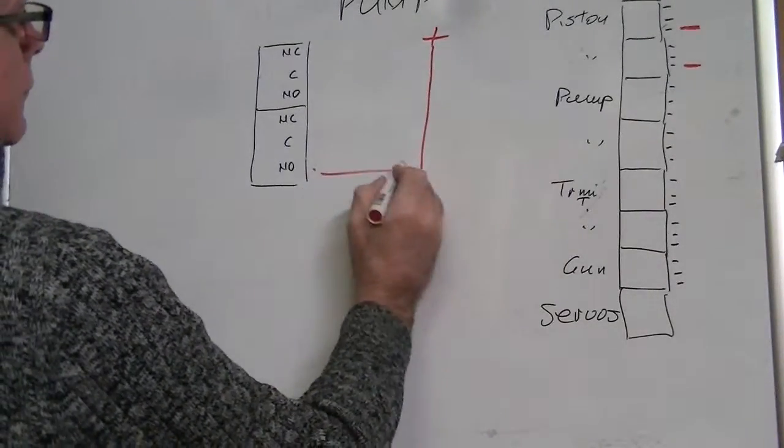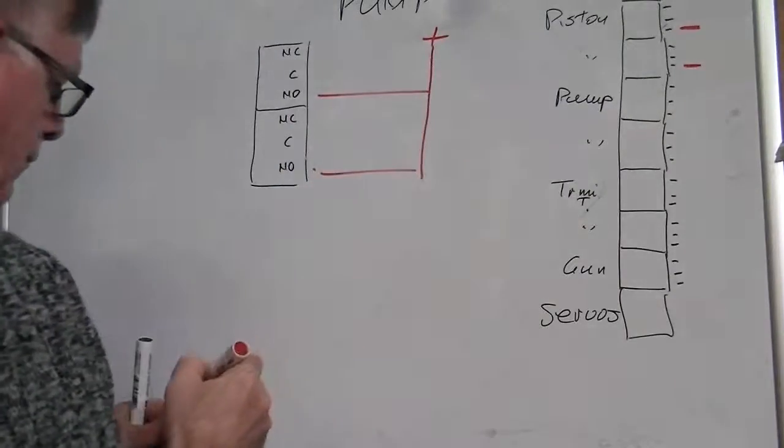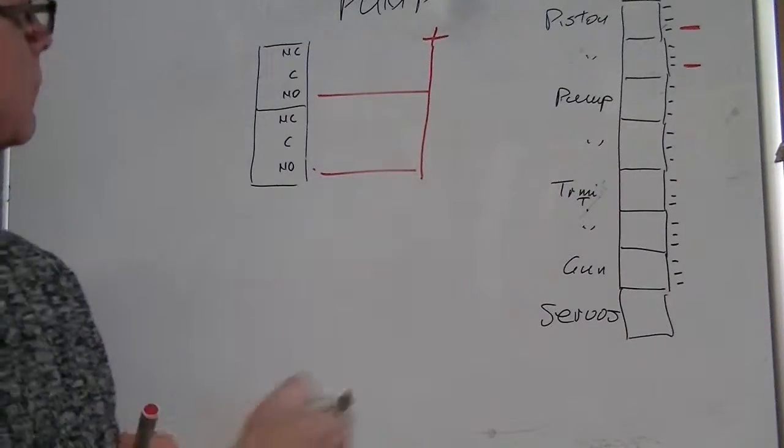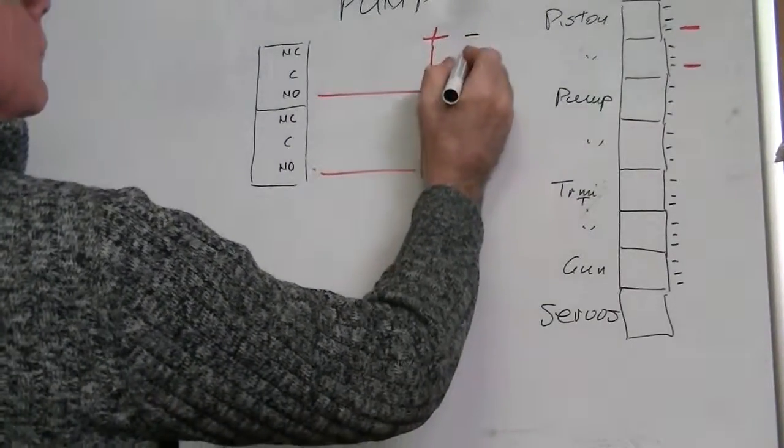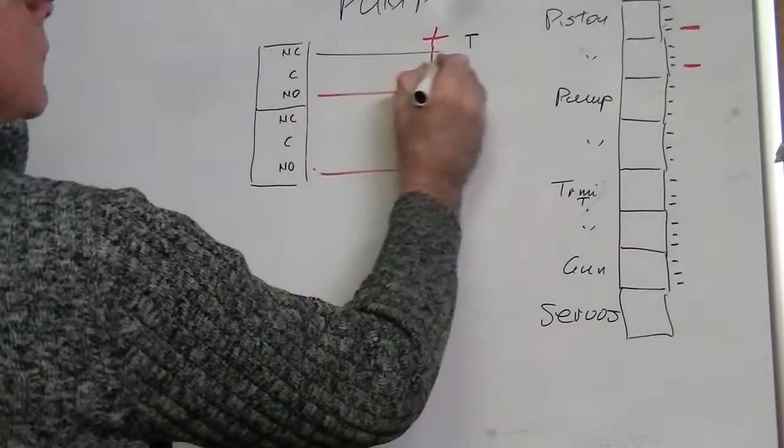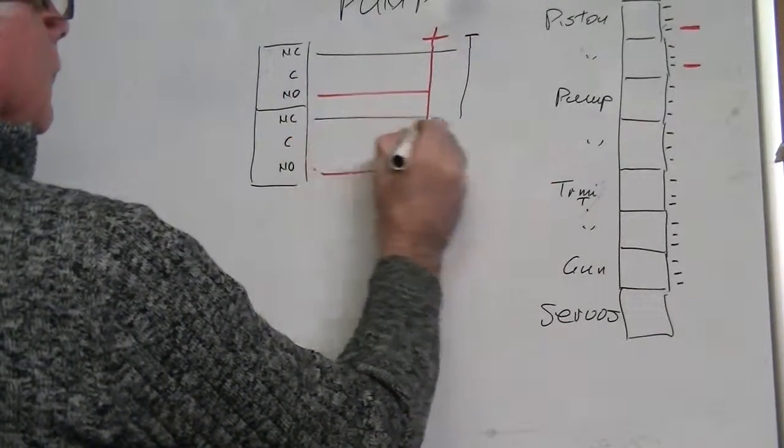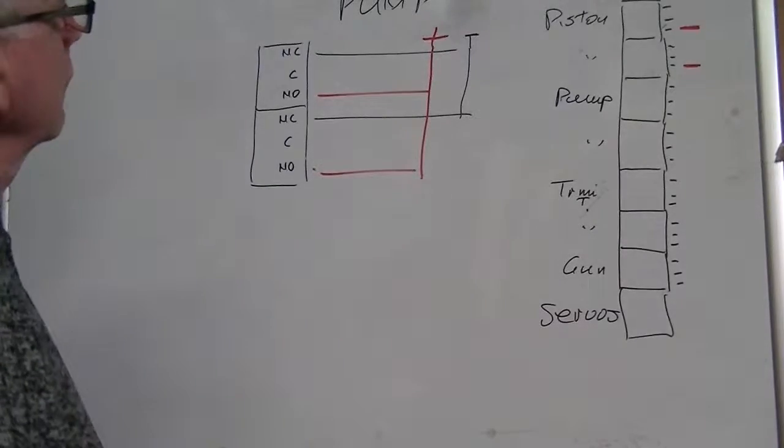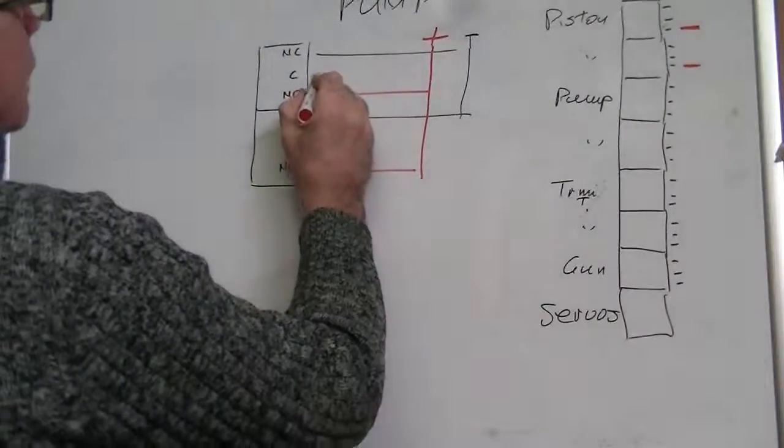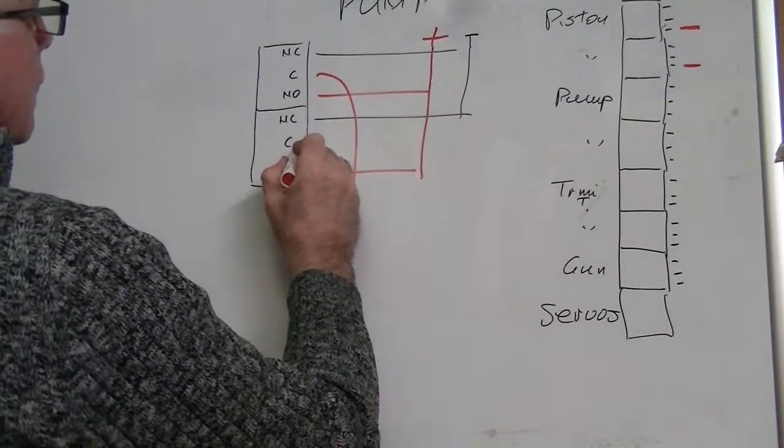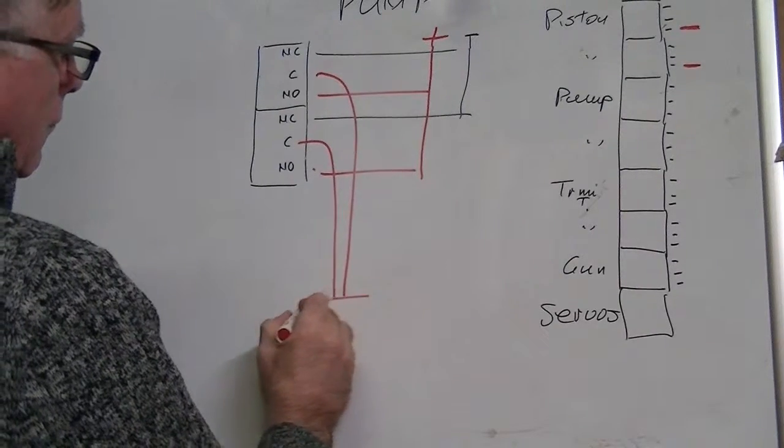The positive goes to the normally open. The negative goes to the normally closed. And then the common goes to the water pump for the ballast tank. That's pretty simple.